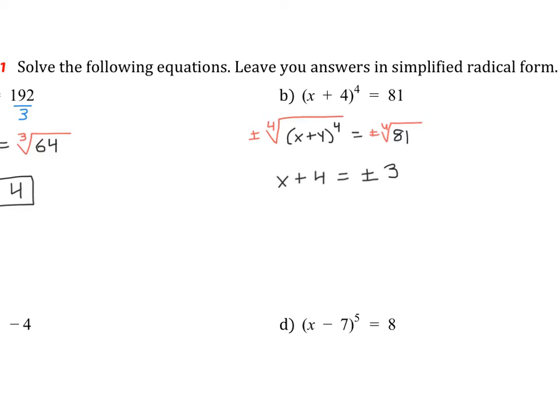So from here, we do need to do an extra step to finish solving. We do need to subtract 4. But also, we need to set up two separate equations, one for positive 3, and one for negative 3. So we can do that first. So we get x plus 4 equals positive 3. x plus 4 equals negative 3. And then we'll subtract 4 from each side. So we get x equals negative 1 and x equals negative 7.